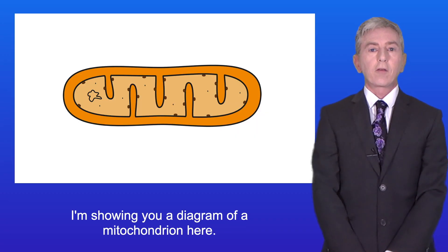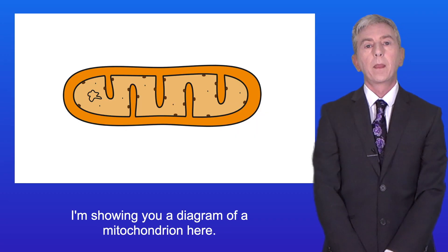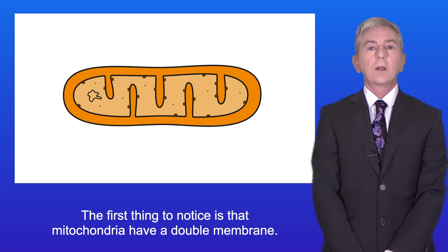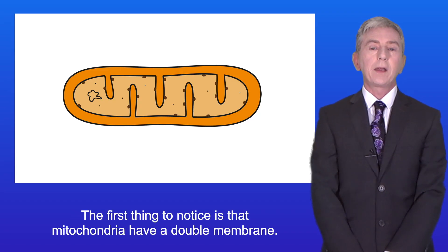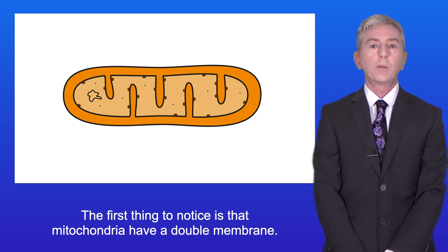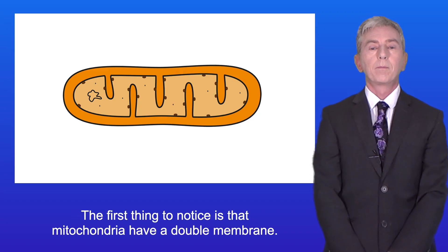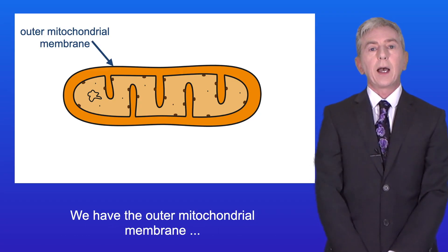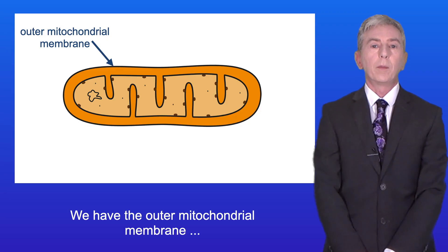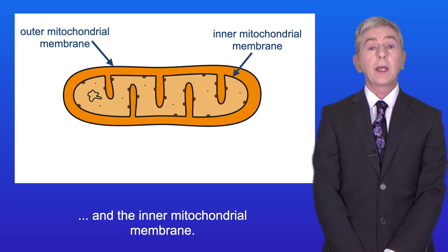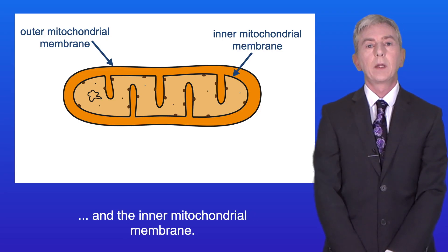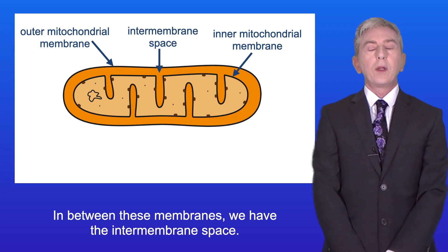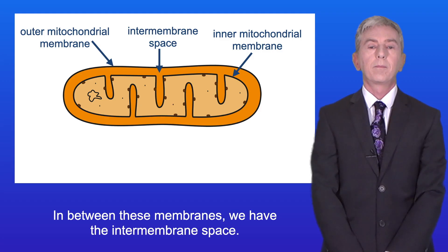I'm showing you a diagram of mitochondria here. The first thing to notice is that mitochondria have a double membrane — we have the outer mitochondrial membrane and the inner mitochondrial membrane. In between these membranes we have the intermembrane space.